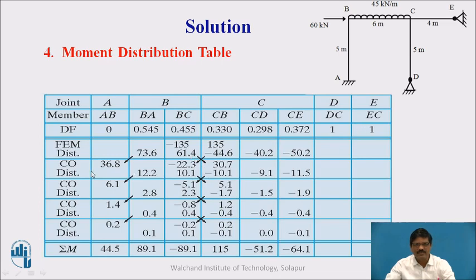This carryover will disturb the joints again, and we will go for distribution. Because minus 22.3 is the unbalanced moment produced now, which is to be balanced. Here also minus 30.7 is to be applied and distributed. In this way we continue with number of iterations. Once we get a very fractional value we stop. After 3-4 iterations the process is over.